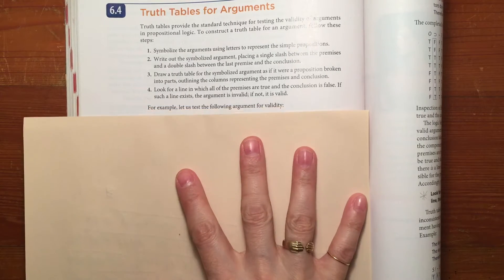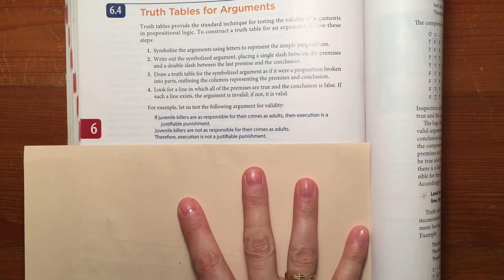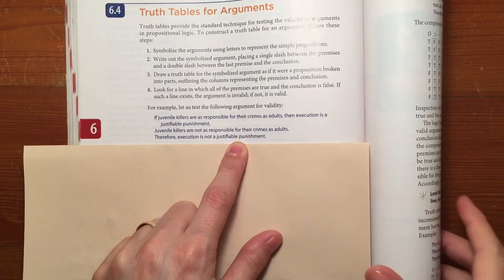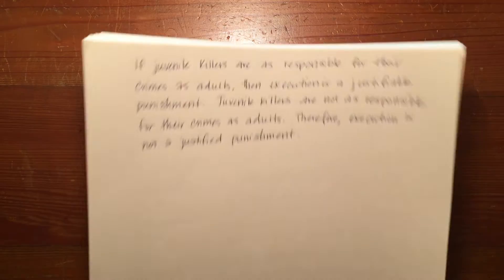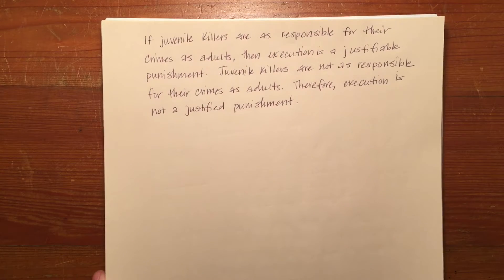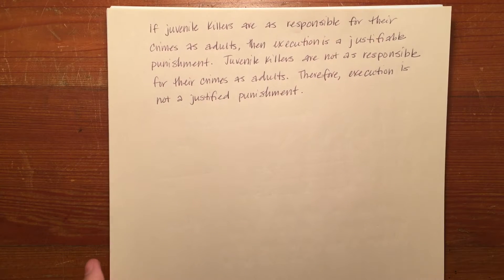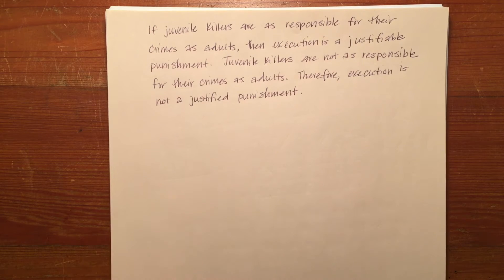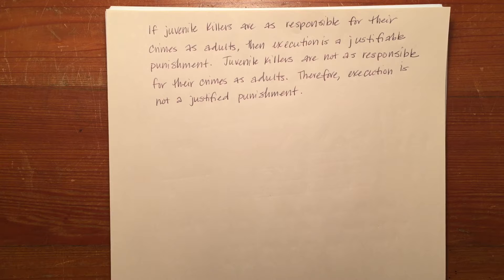I'm just going to show you the example here about juvenile killers and execution and justifiable punishments. The argument is: if juvenile killers are as responsible for their crimes as adults, then execution is a justifiable punishment. Juvenile killers are not as responsible for their crimes as adults. Therefore, execution is not a justifiable punishment.